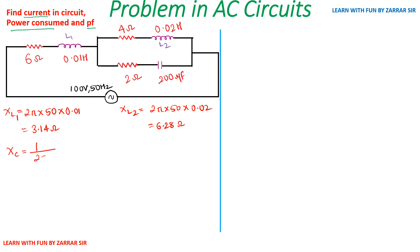Now calculate XC using the formula XC = 1 / (2πfC). Frequency is 50 Hz and C is 200 microfarads (200 × 10⁻⁶ F). Solving this gives XC = 15.92 Ω. We now have XL1, XL2, and XC.